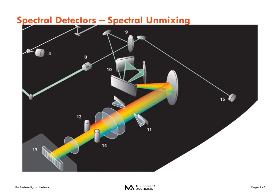There are also spectral detectors where you have a 32-detector array that splits the light spectrally, allowing you to capture a full emission spectrum. This can be really nice especially if you want to do spectral unmixing — if you have two fluorophores that are very close together and want to ensure optimal separation, you can use a spectral detector and then use mathematical algorithms to be certain things are spectrally unmixed.